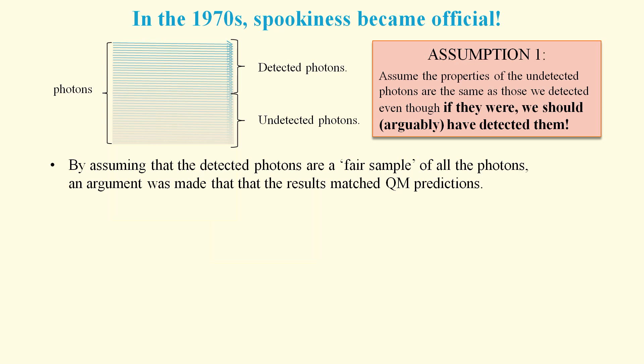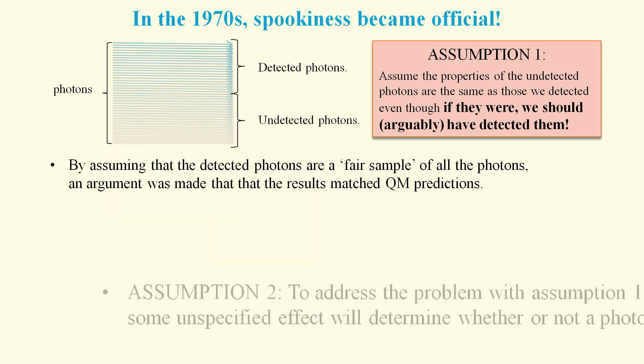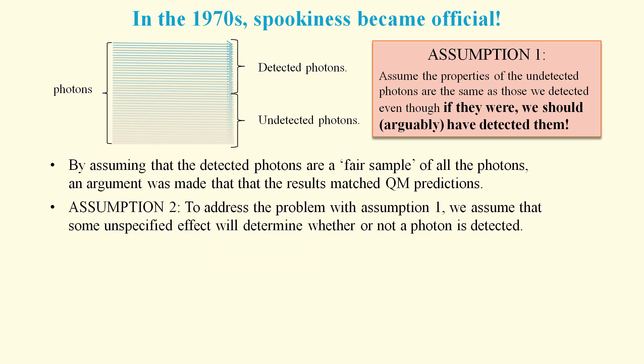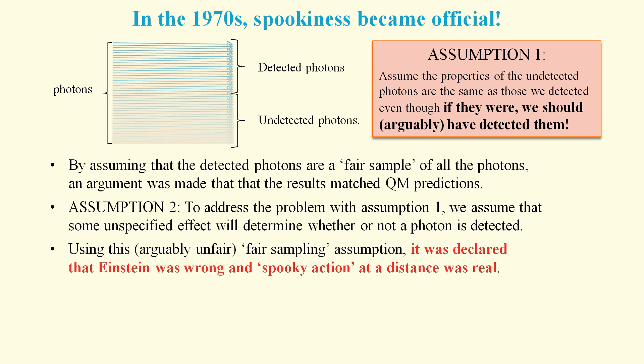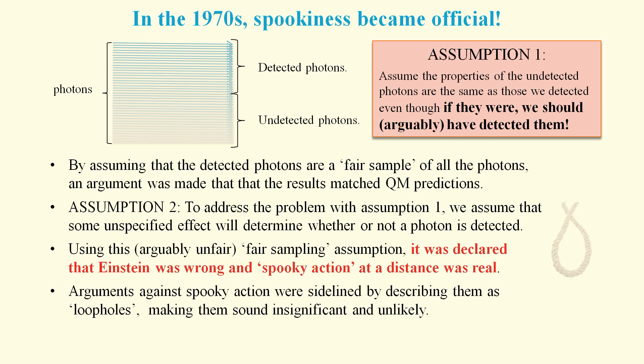This gave them license to ignore the fact that the CHSH inequality requires 100% detection. And so in order to explain why photons with exactly the same properties behave differently, we then have to assume that some mysterious, unspecified thing external to the photons is determining which ones get detected. Using this so-called fair sampling assumption, it was declared that experimental results confirmed the quantum mechanics predictions, and all counter-arguments were dismissed as being highly unlikely loopholes.